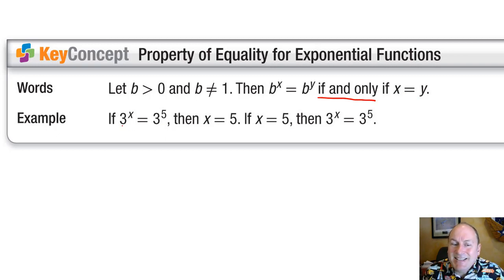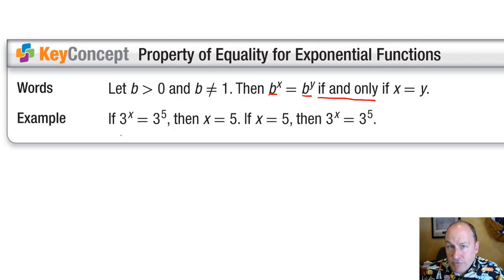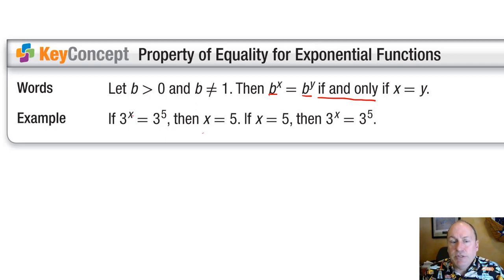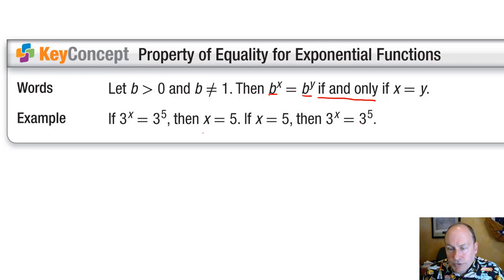In other words, if I can set them up with a common base and the two things are equal to each other, then those two exponents must be equal to each other. For example, if I have 3 to the x equals 3 to the 5, then x must be 5, because if the base is the same and it's an equation, then the exponents themselves must also be the same. So if x equals 5, then therefore 3 to the x equals 3 to the 5th.